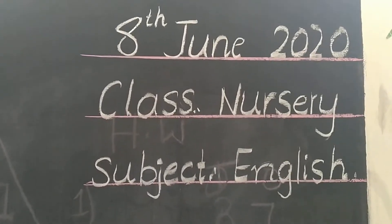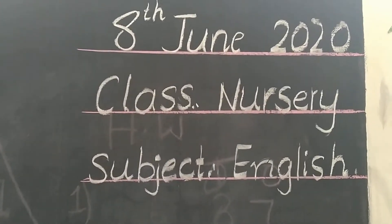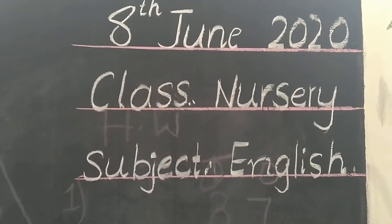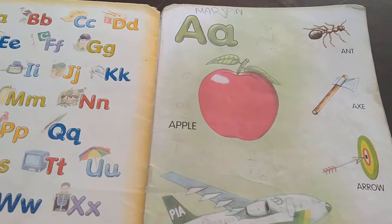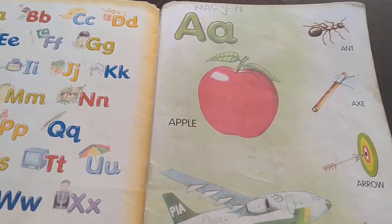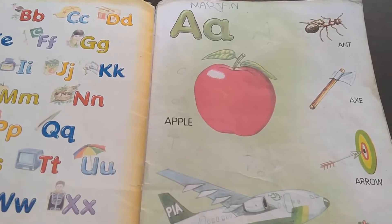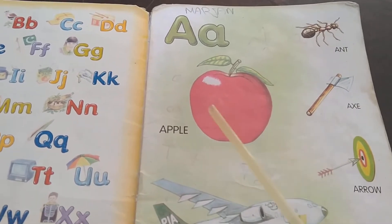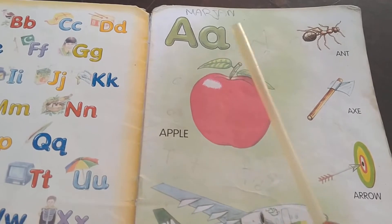Bismillahirrahmanirrahim. Assalamu alaikum and good morning. How are you, children? This is class Nursery, subject English. Dear children, today we are going to read letters from A to H. We are going to revise the letters. Please read with me.